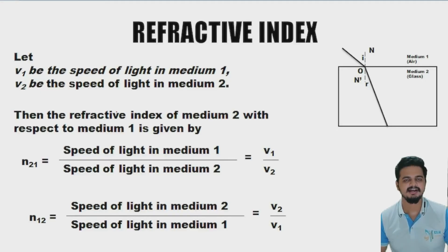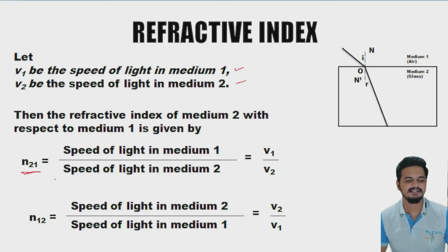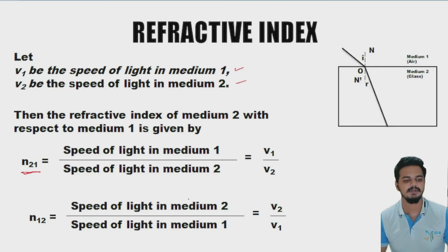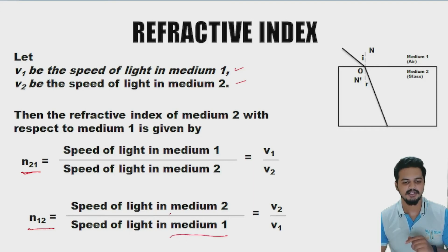That constant is the refractive index. Let v1 be the speed of light in medium 1 and v2 the speed in medium 2. The refractive index of medium 2 with respect to medium 1 is written as n₂₁, which equals v1 divided by v2. Similarly, the refractive index of medium 1 with respect to medium 2, written n₁₂, equals v2 divided by v1.